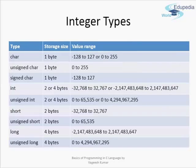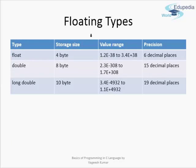These integer data types do not store floating point values — they store only integers or characters encoded as ASCII codes. For storing decimal or non-integer values, we have the floating types. Float is 4 bytes and can store up to a precision of 6 decimal places. Double is 8 bytes with a precision of 15 decimal places. Long double is 10 bytes — the largest data type in C — and can store up to 19 decimal places of precision.